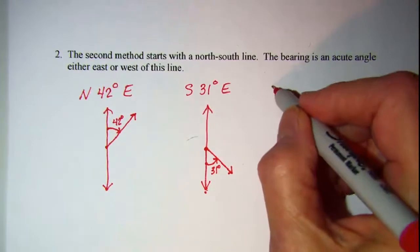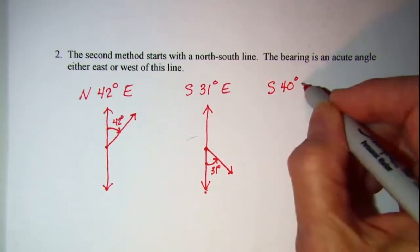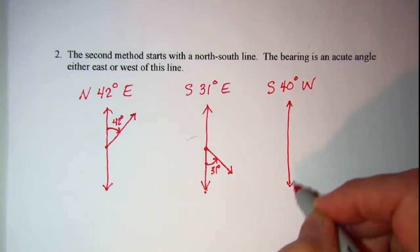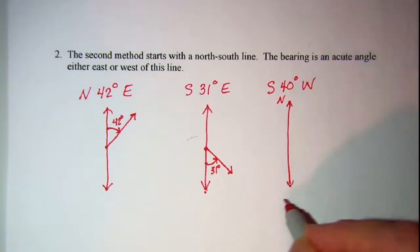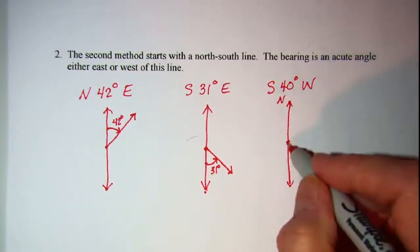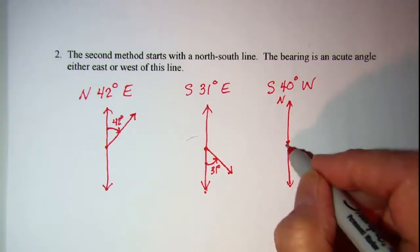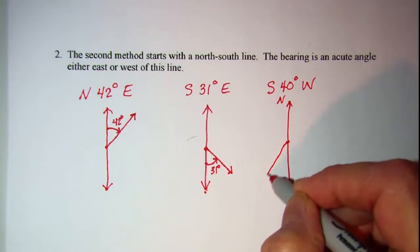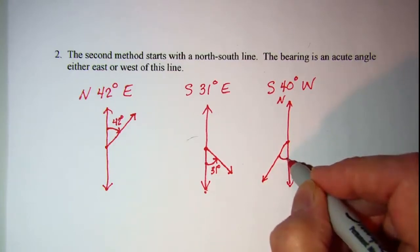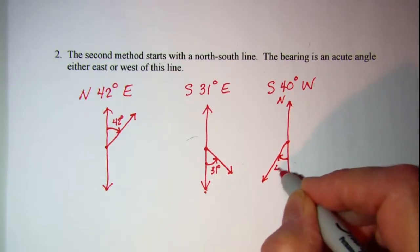A bearing of south 40 degrees west, start with your north-south line and then we want the south line and we want 40 degrees west. So our terminal side would be here and our angle would be 40 degrees.